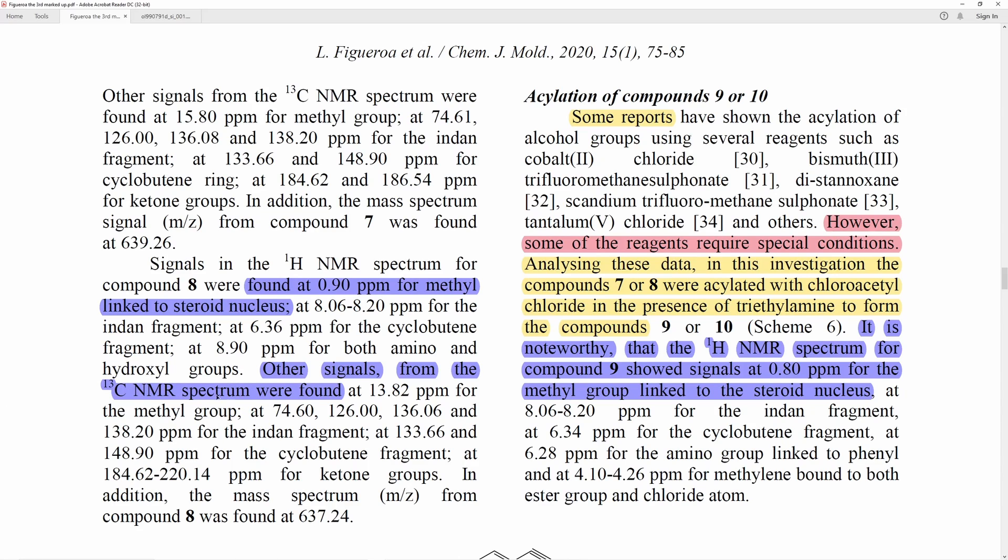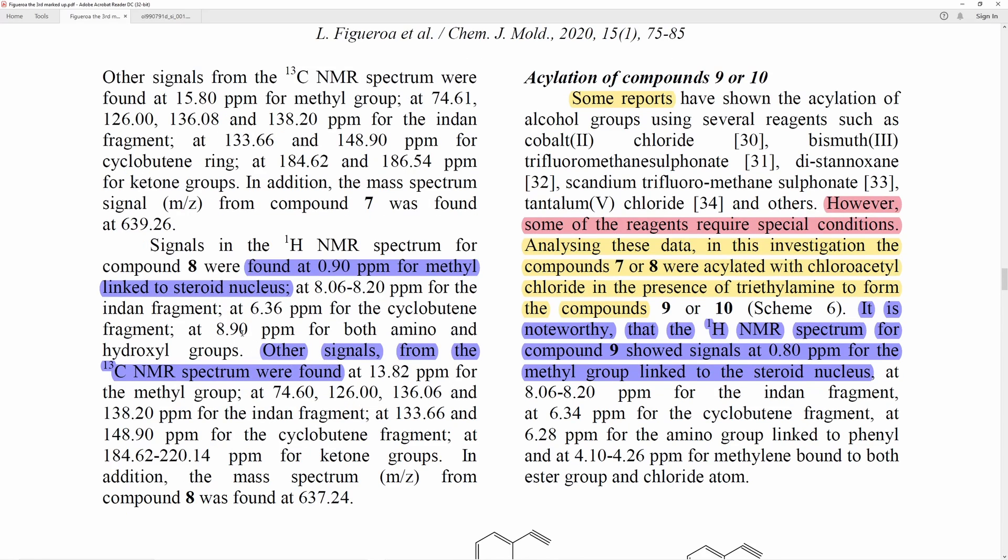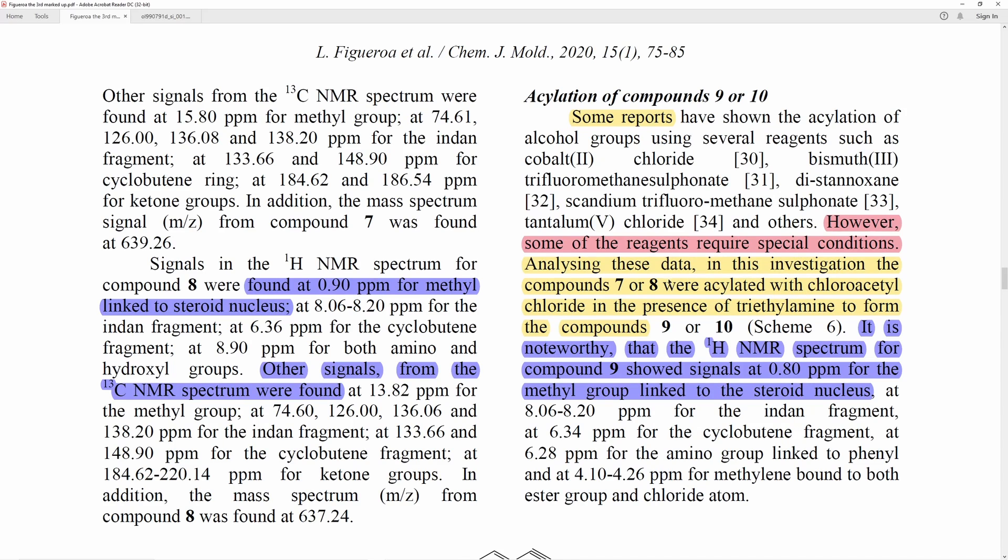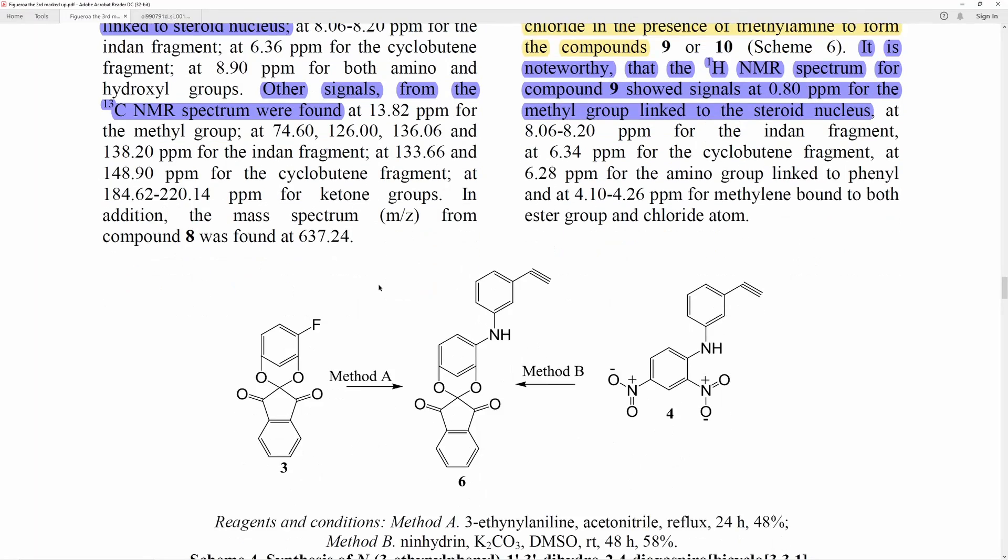Other signals from 13-CNMR spectrum were found. I'm really glad that he found them because I, you know, I don't know what he would have done if he didn't find them. Some reports have shown the acylation of alcohol groups using several reagents. This is fine. Like, the things he's talking about are, like, excessive, very extravagant, but some of them require special conditions. Again, very ambiguous, very mysterious. Analyzing these data, in this investigation, the compounds 7 or 8 were acylated with chloroacetyl chloride in the presence of triethylamine to form the compounds 9 or 10. Now, that's reasonable. This is the second reaction, which I would say is believable. It's actually probably the most believable reaction. I would believe that the alcohols would be able to react with chloroacetyl chloride.